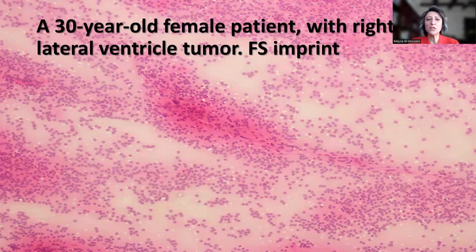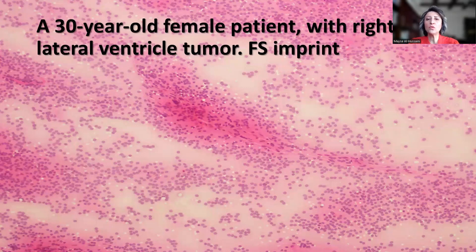This is a 30-year-old female patient who presented with headache and was found to have a right lateral ventricular tumor. First of all, this was sent for a frozen section, and I have to say that our residents and fellows are really extremely skillful in performing frozen section cytology, whether this is imprints or squash preps.